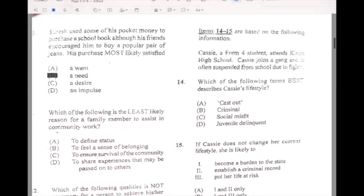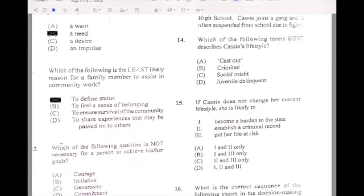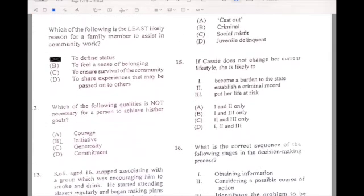Number eleven, which of the following is the least likely reason for a family member to assist in the community work? If your answer is B, to define status. Number twelve, which of the following qualities is not necessary for a person to achieve his or her goal? Generosity.